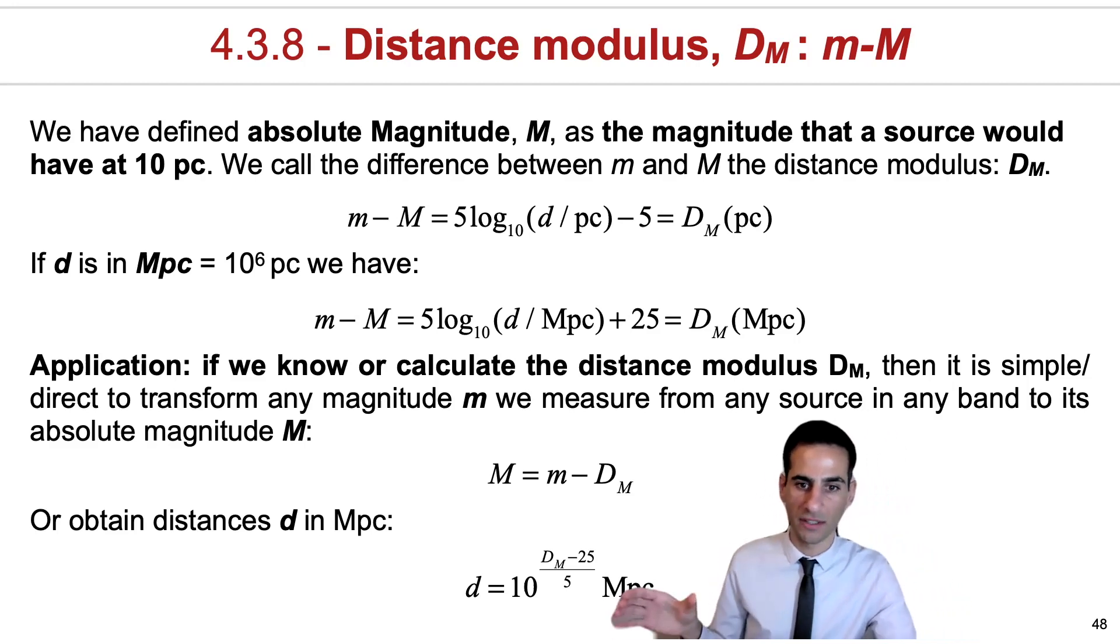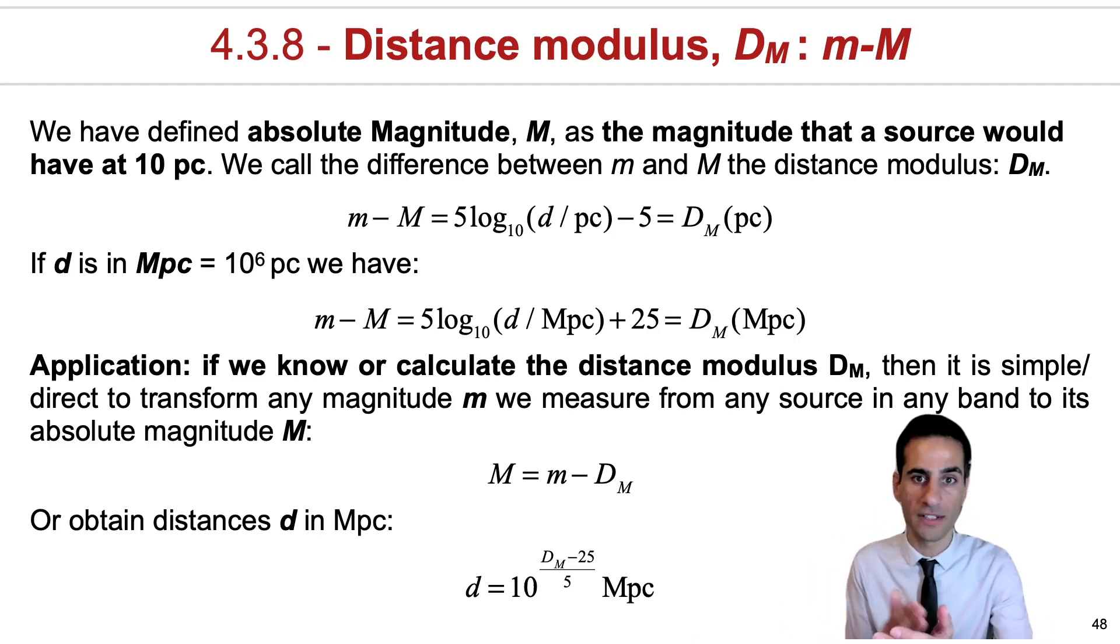And if we want to actually solve for the distance in megaparsecs, you would use an equation that looks pretty much like this. There is, of course, no need to memorize all the equations. But I think most importantly, you should understand where they come from and how simple it is to derive them, provided that you understand what an absolute magnitude and an apparent magnitude is.